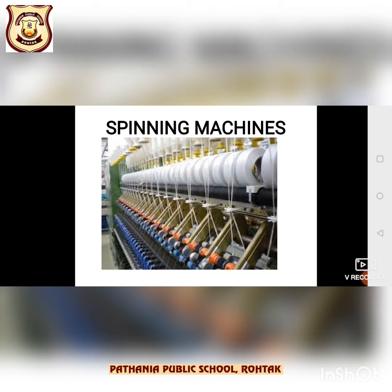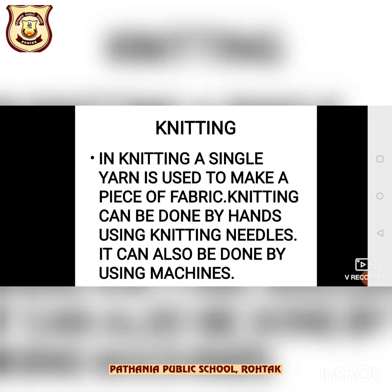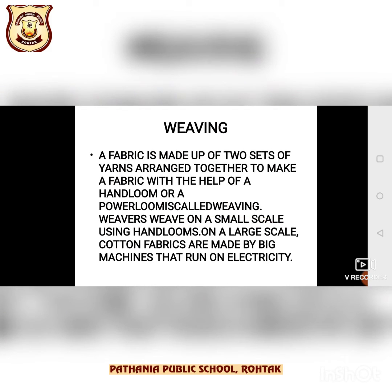Fabrics are made from yarn by two main processes: weaving and knitting. The process of making a fabric by arranging yarns passing in one direction with other yarns at right angles to them is called weaving. In weaving, fabric is made up of two sets of yarn arranged together with the help of handlooms or powerlooms. Weaving involves two sets of yarns arranged at right angles to one another, and the weaving of yarn to make fabric is done by using looms.